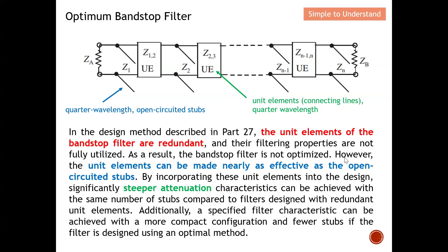The unique element can be made nearly as effective as the open circuit stub, meaning we can utilize it to achieve steeper attenuation — which gives a steeper skirt and steeper roll-off factor. By incorporating this unique element into the design, the desired characteristics can be achieved with the same number of stubs compared to the design with redundant unique elements. In short, the optimum band stop filter gives steeper attenuation.